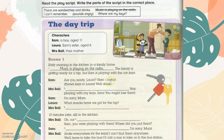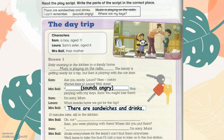Are you ready, Laura? Here, catch. (Throws keys to Laura.) Well done. Stop playing with my keys, Sam — you might lose them. I'm sorry, Mom. What snacks are we having? What did we get for the trip? There are sandwiches and drinks.